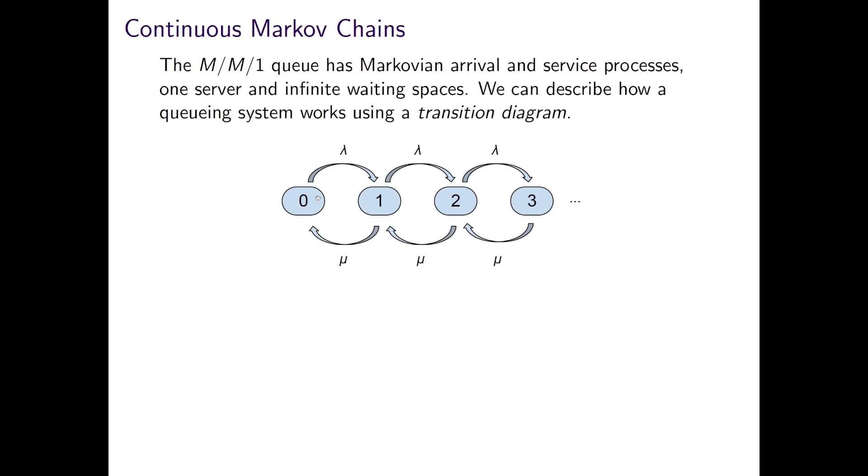Then we have a transition diagram to represent the possible changes of state. The state shows the number of people in the system. So that is no people in the system, one person, two people and so on.